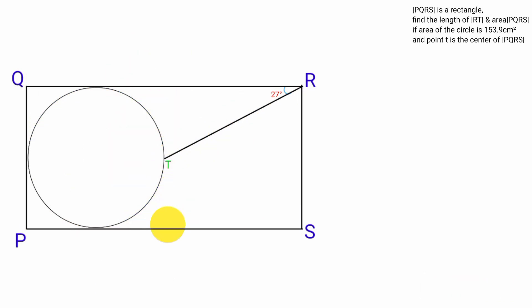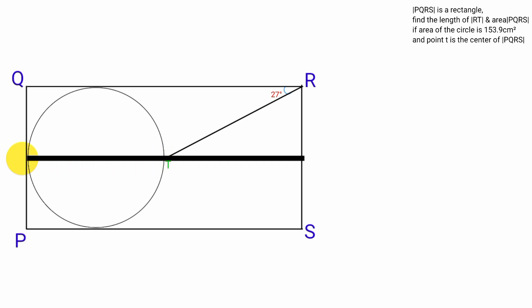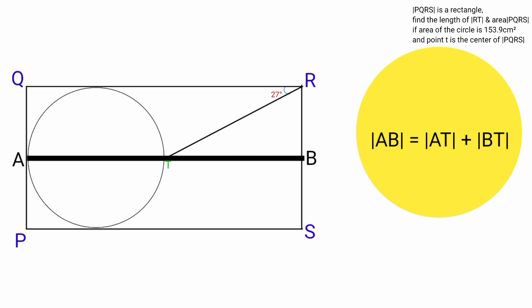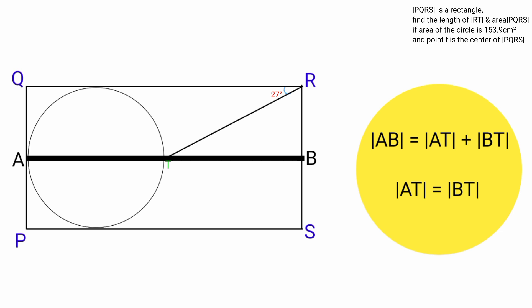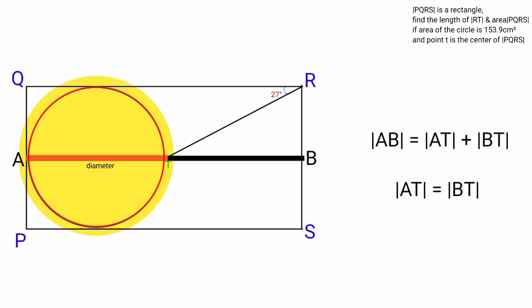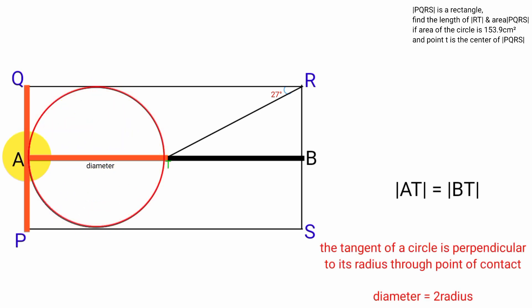Let's label this point A and this point B. Line AB equals line AT plus line BT, and line AT equals line BT because point T bisects it, dividing it into two equal halves. Line AT is the diameter of the circle.